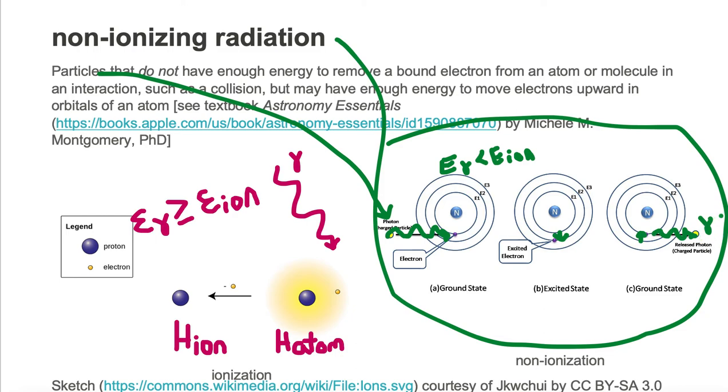Non-ionizing radiation does involve some radiation coming from the system, because the incoming photon or particle has to have just the right amount of energy to cause the electron to move up in an orbital.